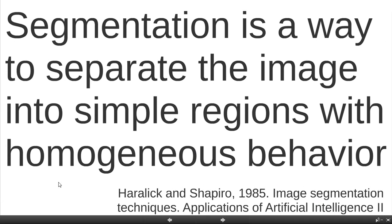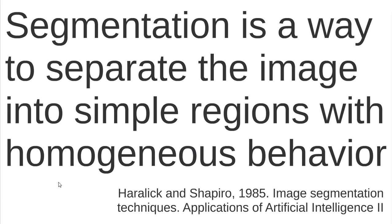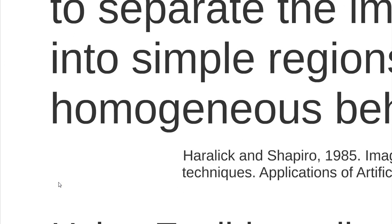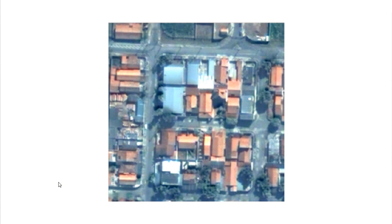First of all, let's see this description of image segmentation provided by Haralik and Shapiro in 1985 that says segmentation is a way to separate the image into simple regions with homogeneous behavior. Let's see a simple example. Suppose that we have this image. The aim of the segmentation is to find such regions, regions of homogeneous behavior.